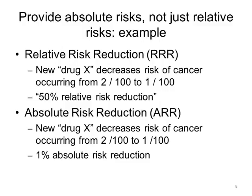Here is an example of how to provide absolute risks, not just relative risks. In a clinical trial evaluating a new drug X to prevent cancer, 200 participants signed up. In the control group, 100 participants received a placebo pill and 2 developed breast cancer. In the treatment group, 100 people received the drug and only 1 person developed cancer. Comparing the two groups, 2 versus 1, results in a 50% reduction in cancer — that sounds pretty good. People who want to avoid cancer might consider taking this drug, even if there are side effects.